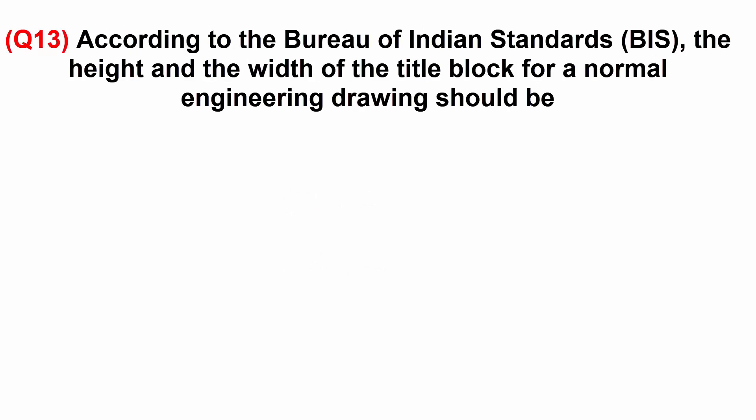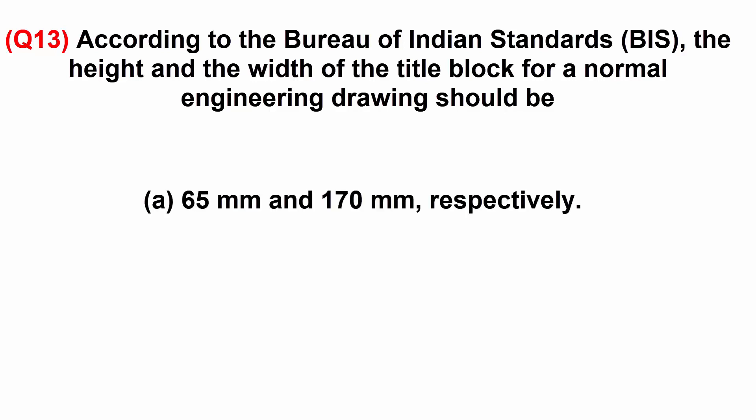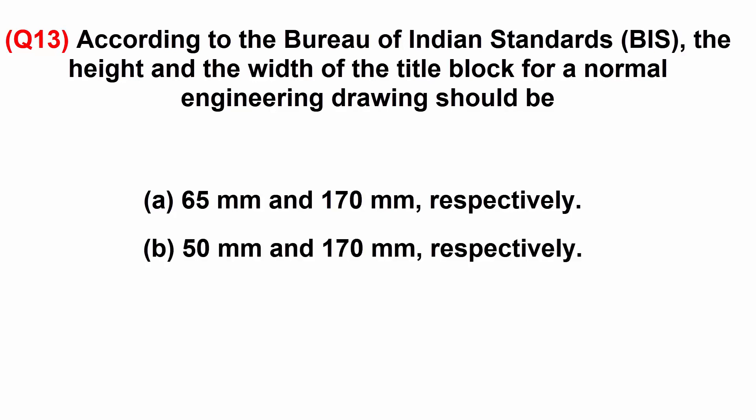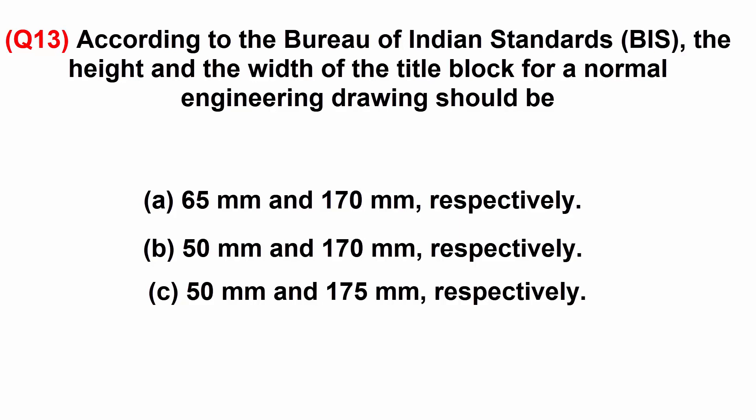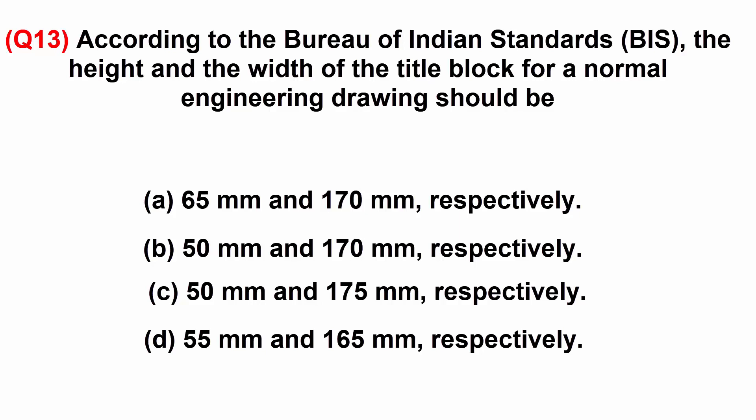According to the Bureau of Indian Standards, the height and the width of the title block for a normal engineering drawing should be: A: 65 mm and 170 mm respectively. B: 50 mm and 170 mm respectively. C: 50 mm and 175 mm respectively. D: 55 mm and 165 mm respectively.